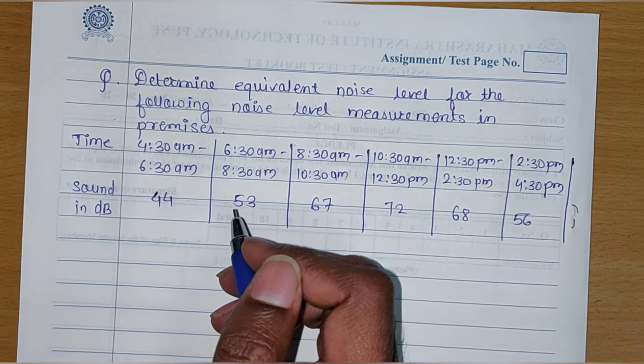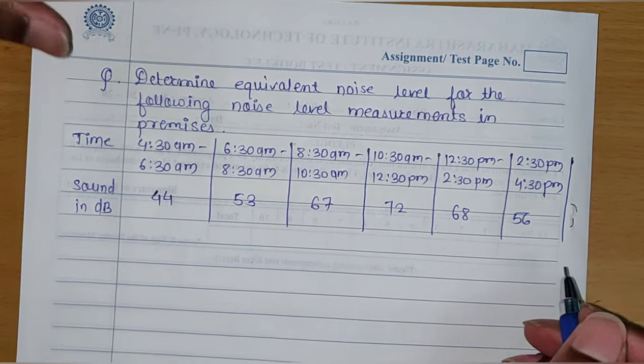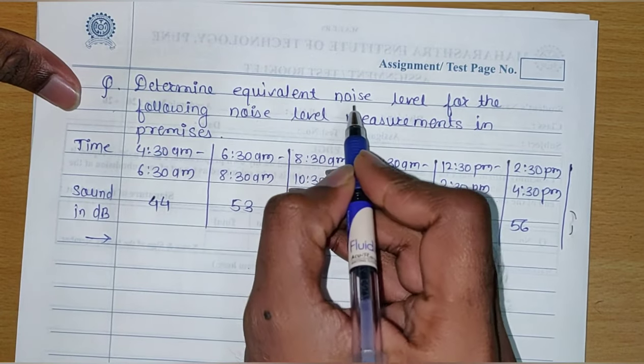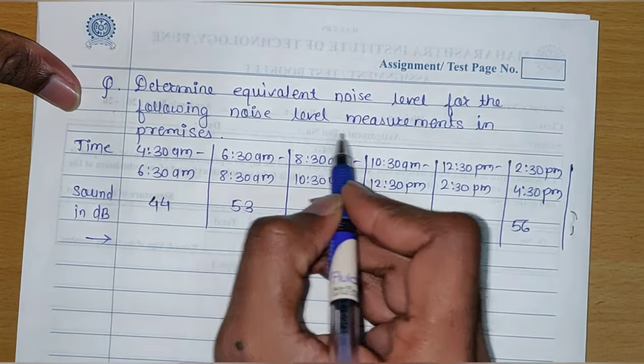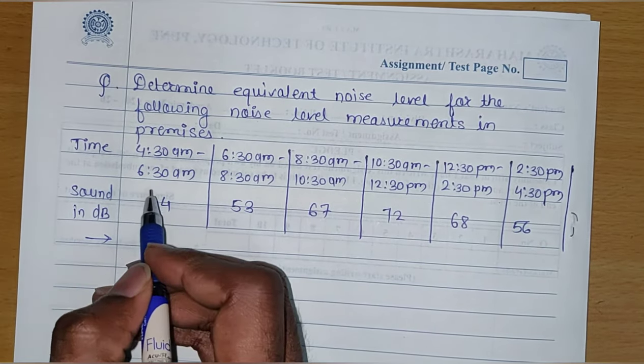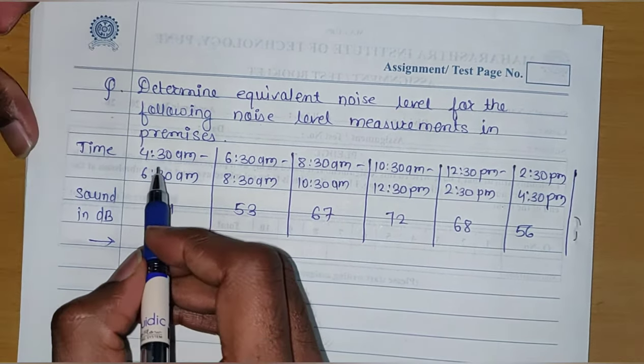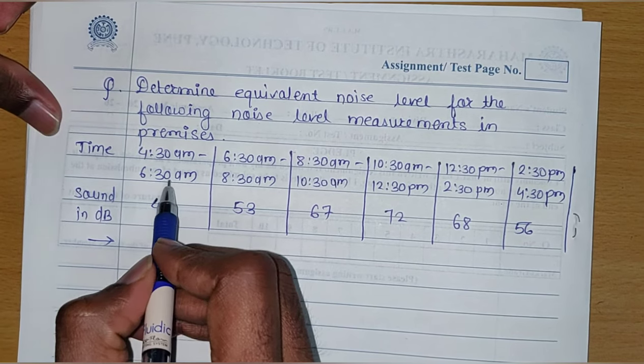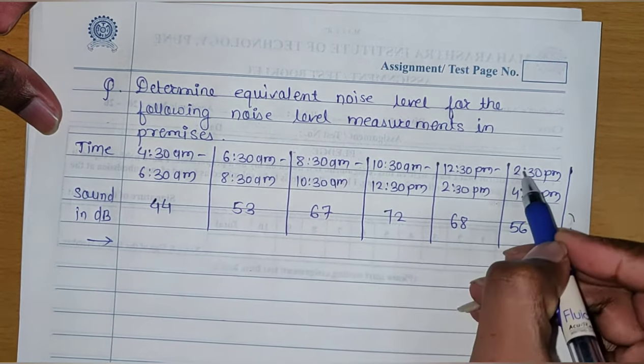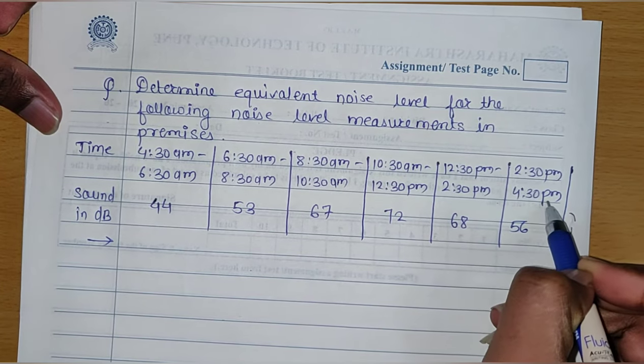Let's start. Determine equivalent noise level for the following noise level measurements in the premises. The values are given in tabular form. Time intervals are 4:30 AM to 6:30 AM, 6:30 AM to 8:30 AM, and so on up to 2:30 PM to 4:30 PM.